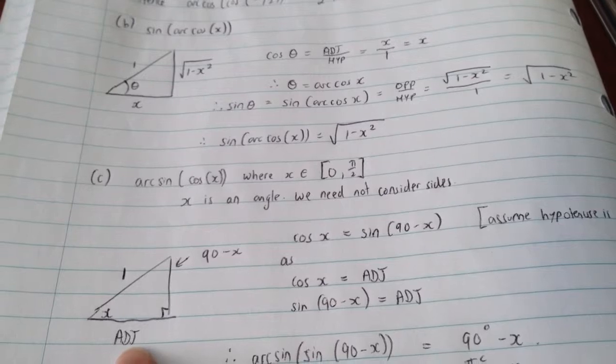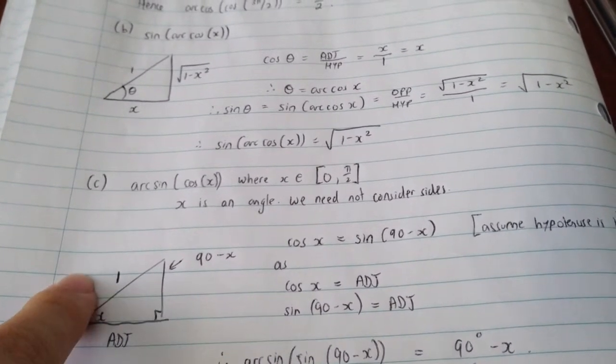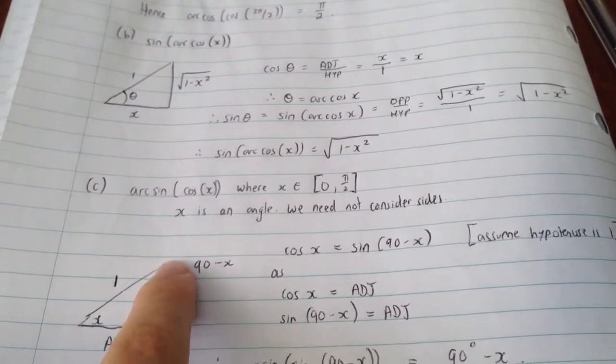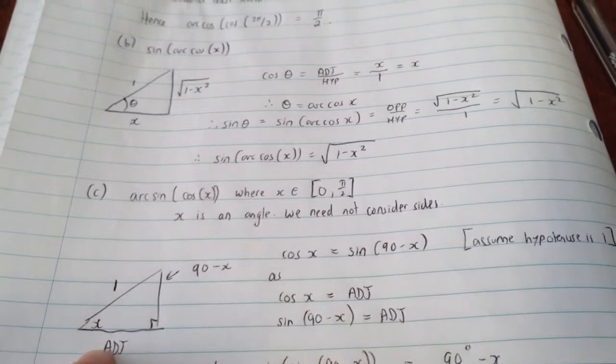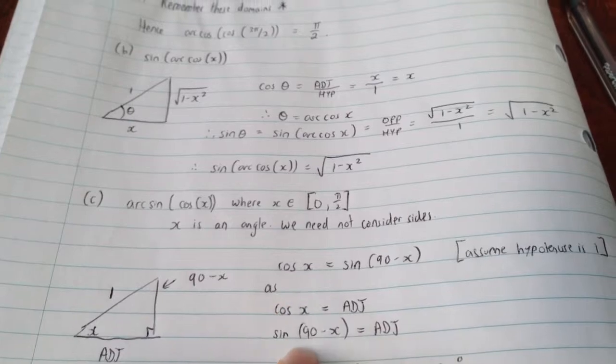But if we have a look at cosine of x, that's obviously equal to the adjacent side, right? We take the cosine of x, adjacent on hypotenuse. But as we can see, adjacent on 1 is going to be adjacent. And if we take the sine of 90 minus x, that's opposite side to that 90 minus x angle, which is the adjacent side, we divide that by 1, we also get adjacent. So those two are equal.